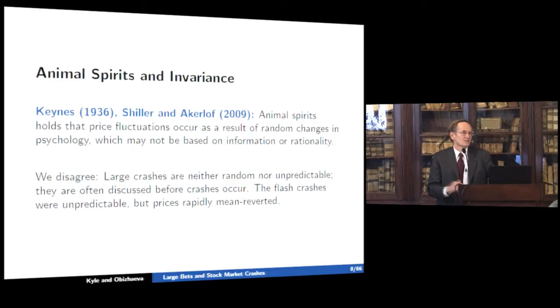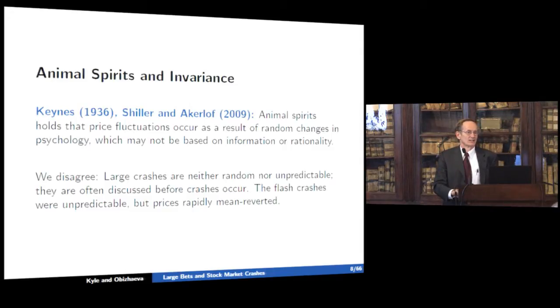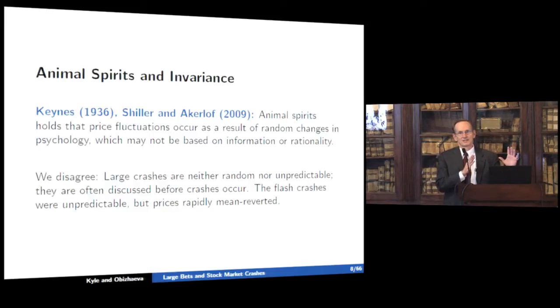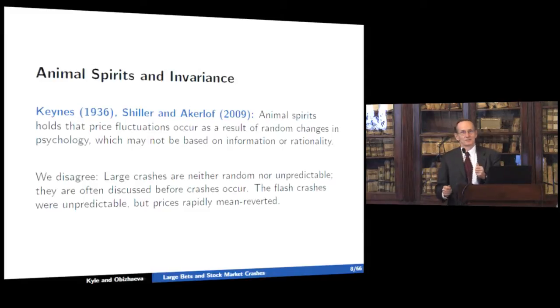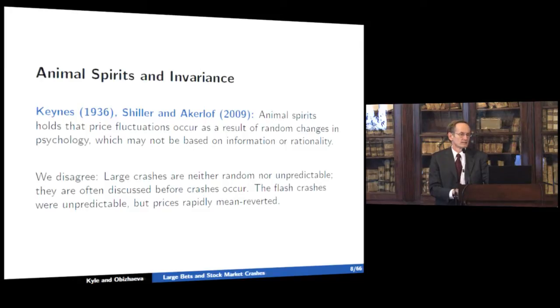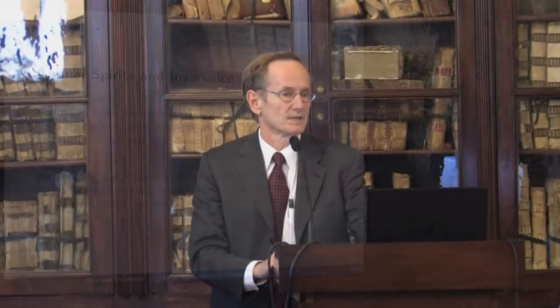We also disagree with Keynes (1936) and Akerlof and Shiller more recently on the idea that animal spirits generate price fluctuations. In all five crash events, it's hard to point to changes in animal spirits or psychology occurring before the events actually happened. It's easy to identify a change in psychology after the market goes down 20% — everyone panics — but the decline causes the panic, not the other way around. We think it's quantities being dumped on the market, not changes in psychology, perhaps accompanied by a mechanical rule being followed.